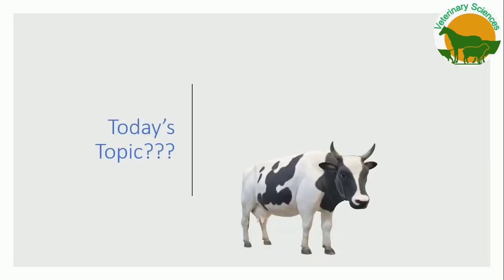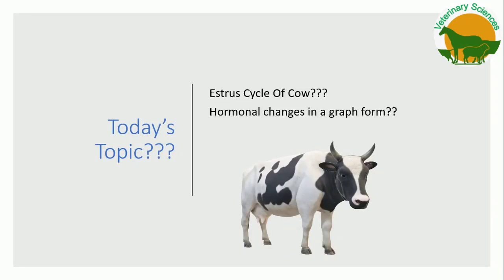On a very demanding topic, which is the estrus cycle of the cow. We will also see the changes in hormones in graph form, and at the last we will see how to estimate the time of AI in cow as well as in buffalo.